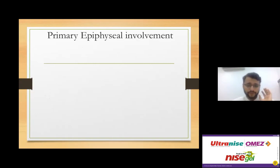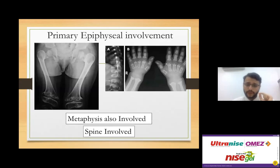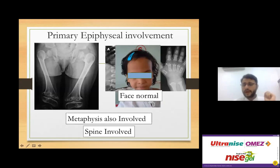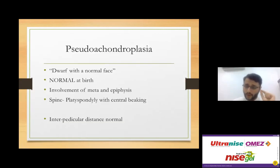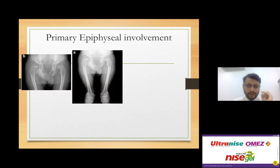When both epiphysis and metaphysis are involved with spine involvement but a normal face, this is pseudo-achondroplasia. The kids are normal at birth. The spine shows platyspondyly with central beaking. The face is completely normal — a normal-faced dwarf with significant involvement of the epiphysis and metaphysis is typical of pseudo-achondroplasia.